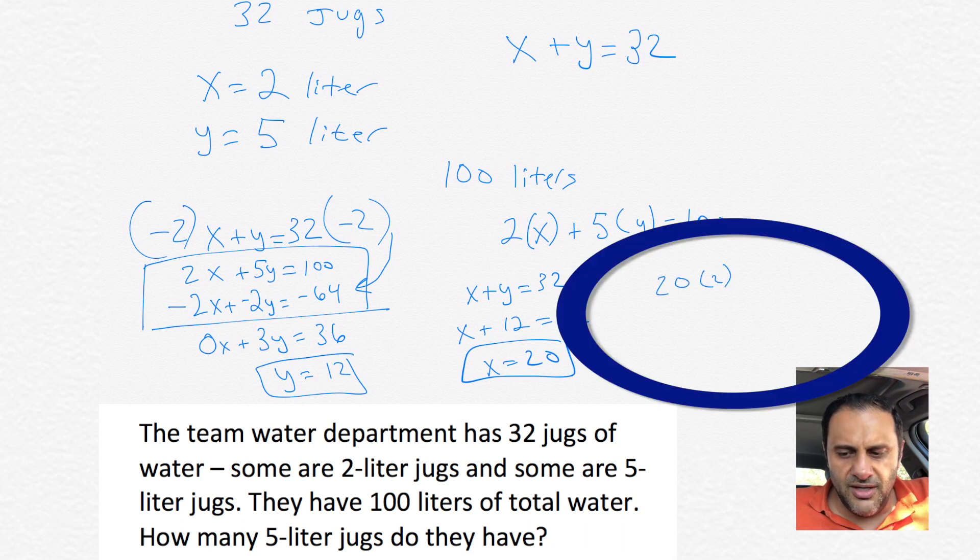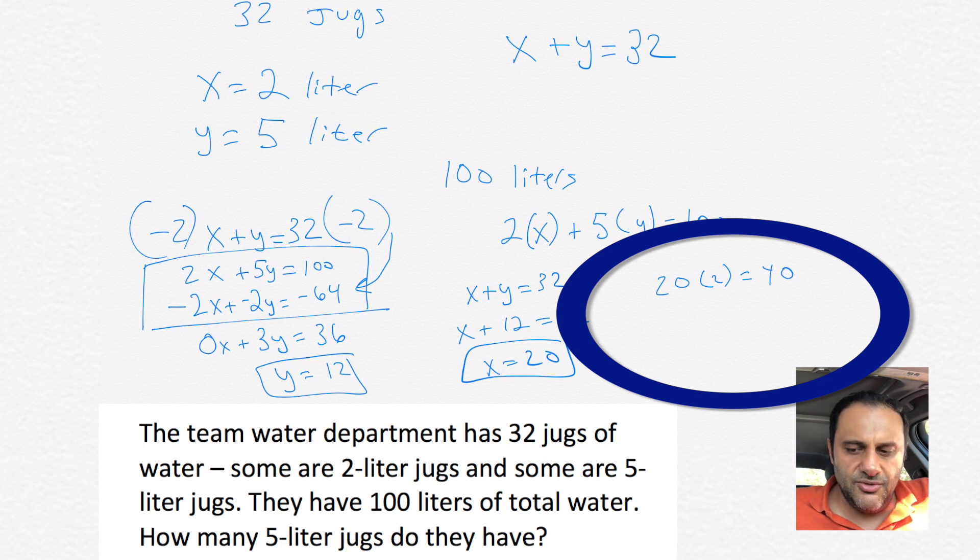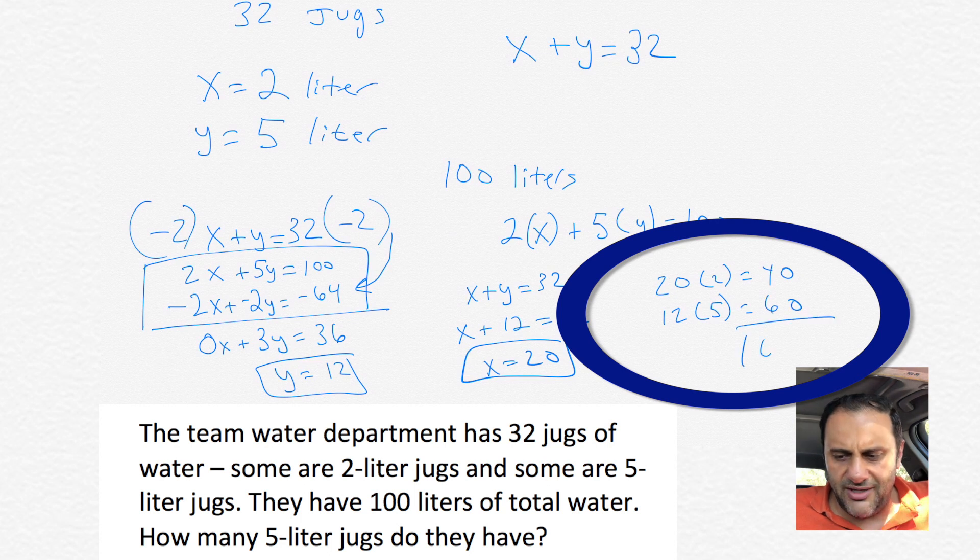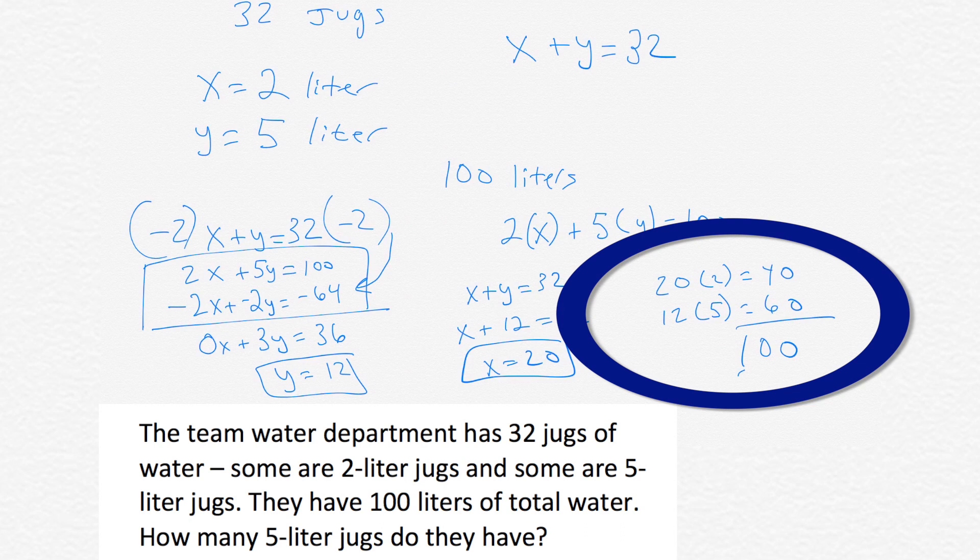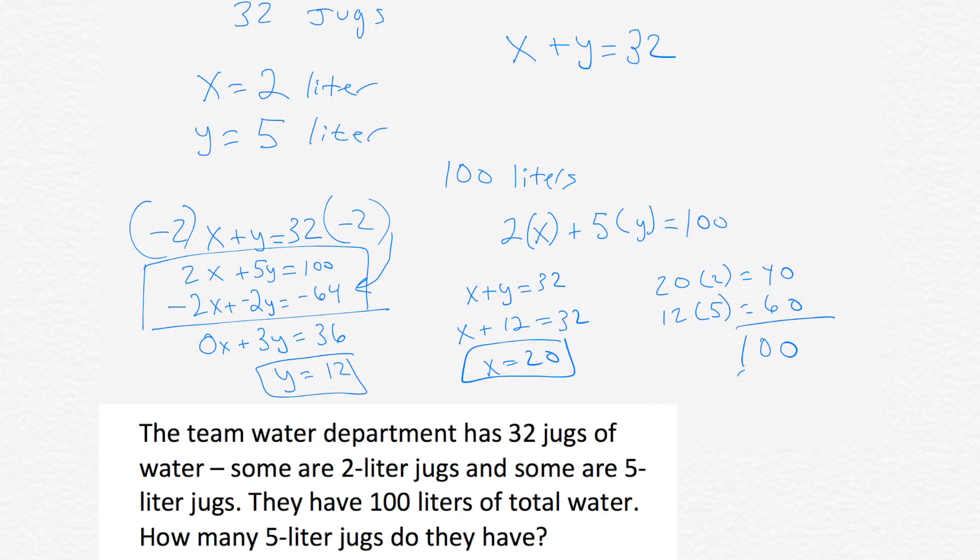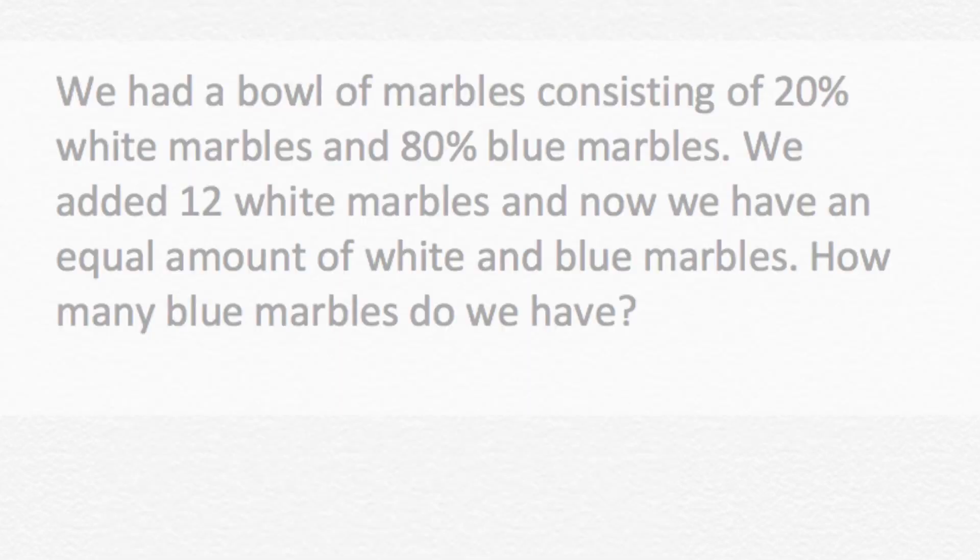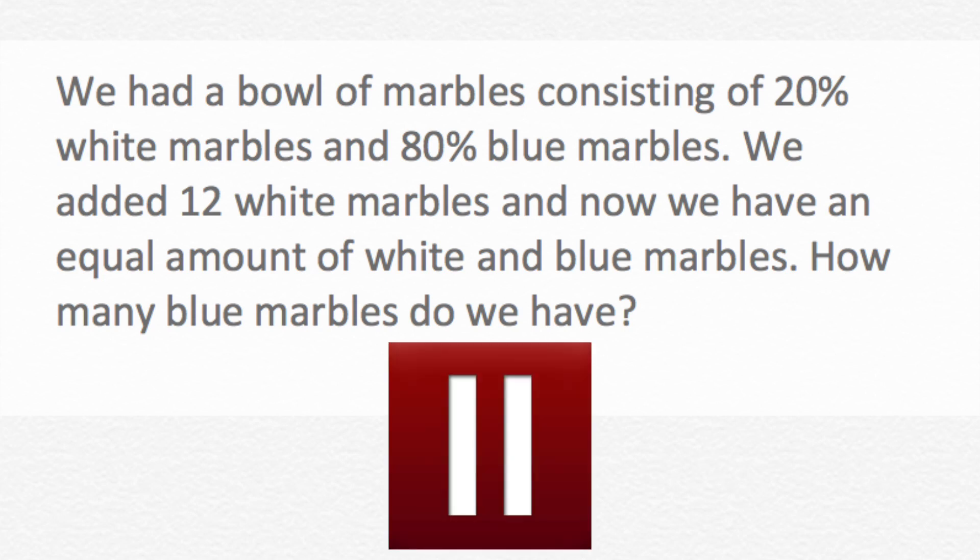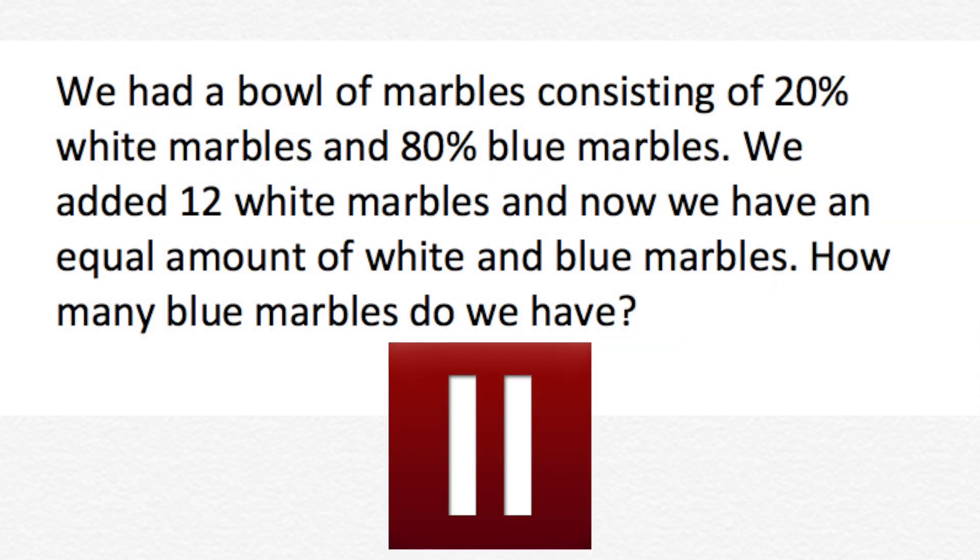Just to check our work, obviously 20 plus 12 is 32, but if we check it the other way too, we have 20 times the 2-liter jugs, so 20 times 2, plus 12 times 5. So we'd have 40 liters from the 2-liter jugs plus 12 times 5 is 60, so we'd get 60 liters from the 5-liter jugs, and 40 plus 60 is 100, so that checks out as well.